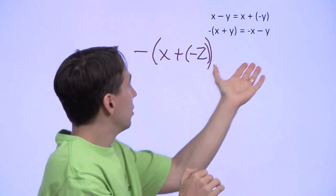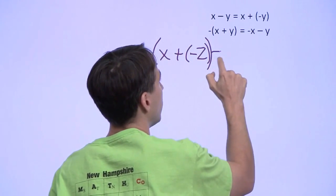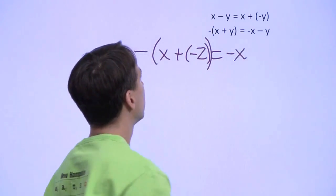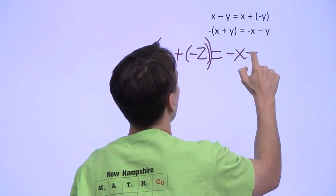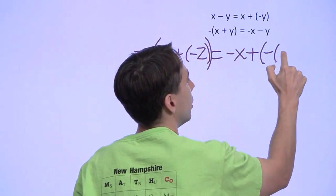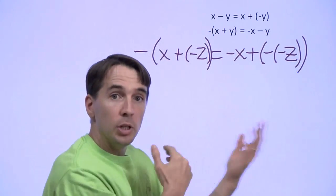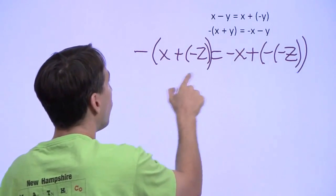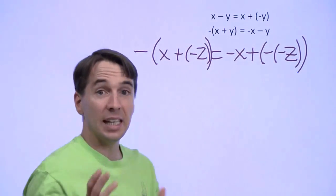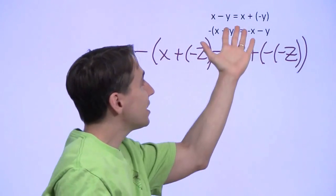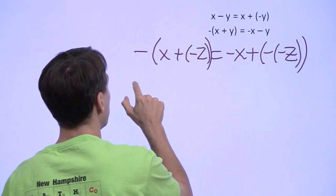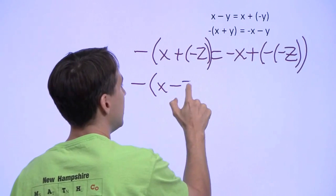Well, we go ahead and distribute this out, distribute the negation, we'll get minus x plus the negation of the negation of z. And all we're doing there is distributing the negation. Now, over here, x plus the negation of z. That's subtraction. So this is just x minus z.